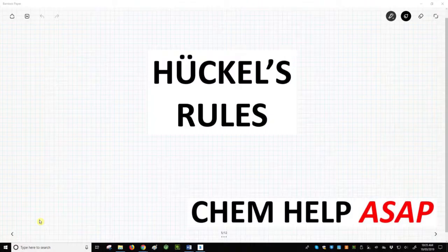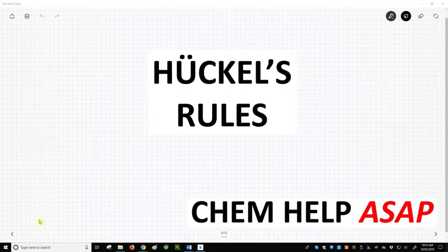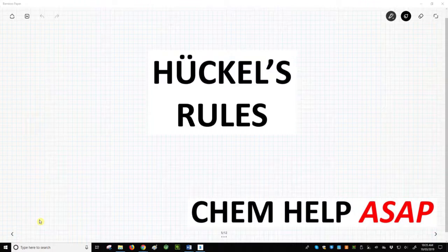Hello from Chem Help ASAP. Once we know that some molecules have this property of aromaticity, we need to learn how to identify them. Fortunately, back in the 1930s, a scientist named Eric Hückel created a simple yet reliable set of criteria for aromatic molecules. These criteria are called Hückel's Rules.